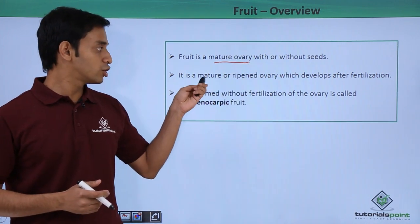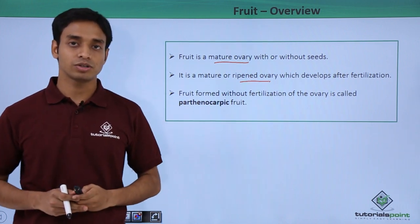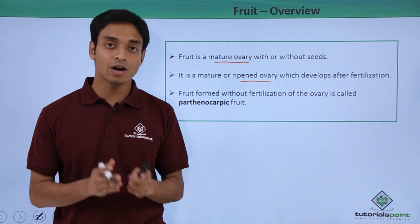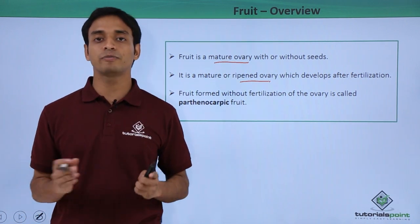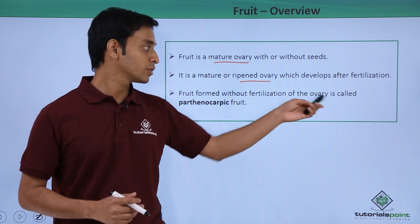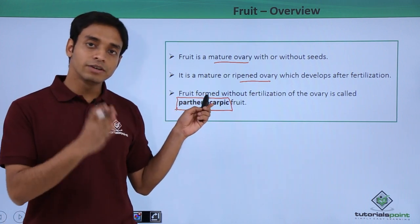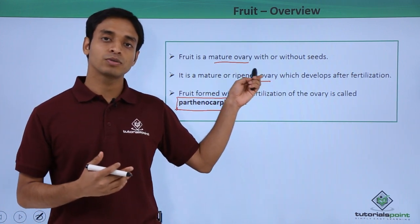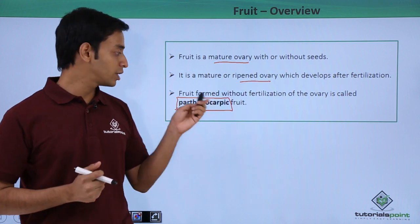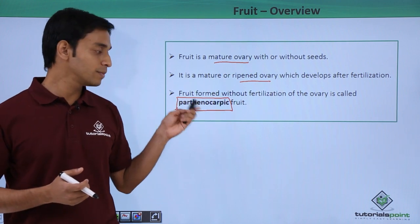A fruit is a mature or ripened ovary that develops after fertilization, but there are exceptions. Sometimes the formation of fruits can take place without the process of fertilization — that is, without the fusion of male and female gametes. Fruits formed without fertilization are known as parthenocarpic fruits, which is a deviation from the general type where fertilization is required before the ovary develops into a fruit.